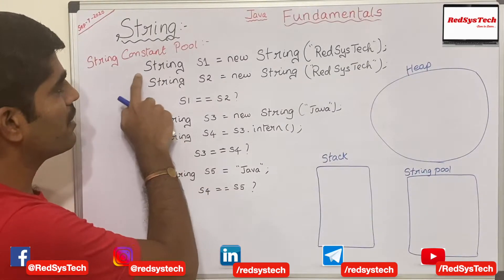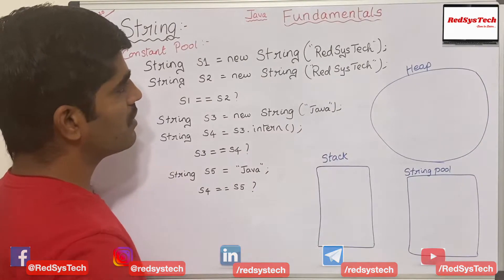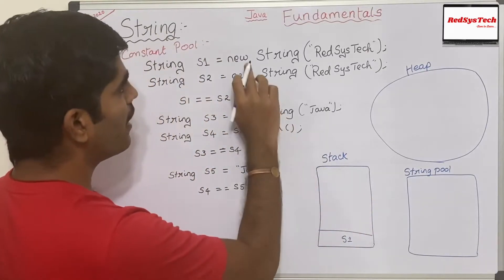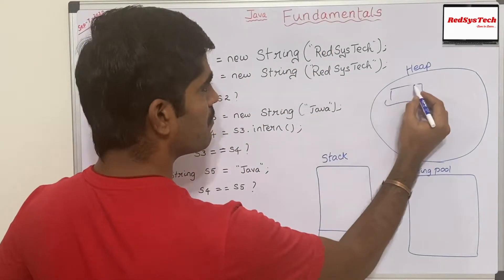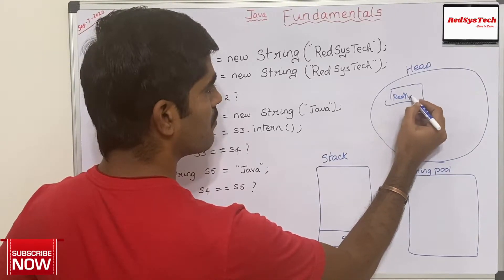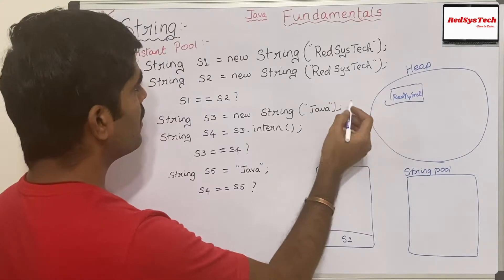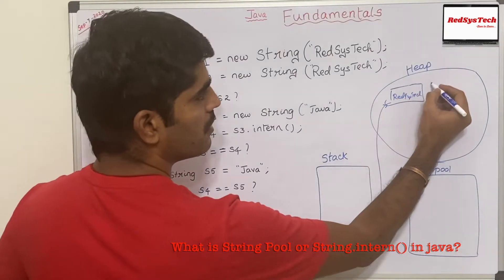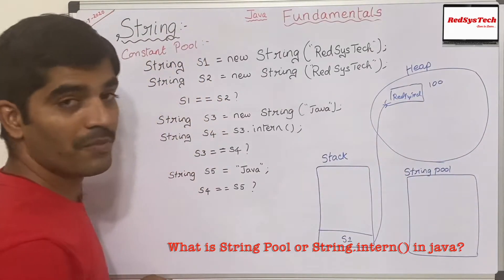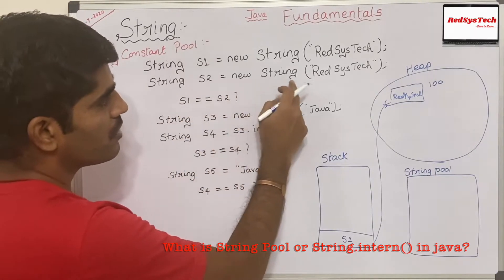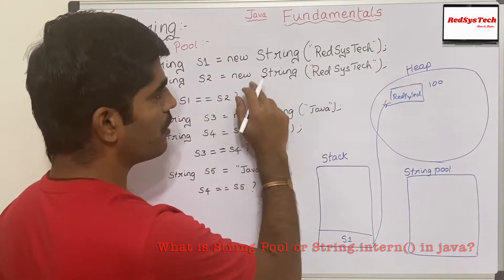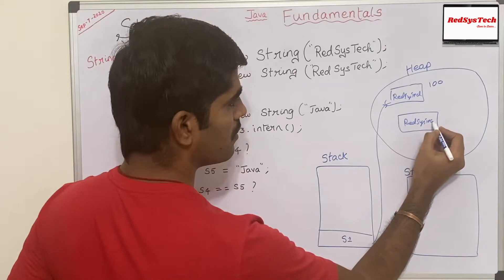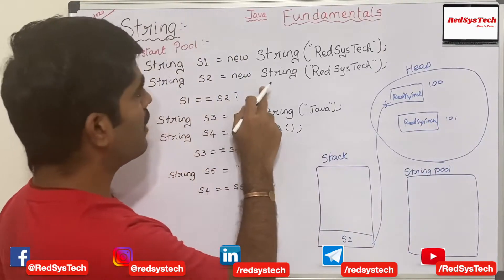Let's say I'm creating: String s1 = new String("register"). When this line gets executed, s1 is the object reference which gets created in the stack, and the object is created in heap with the value 'register'. This object is referred to by s1 at, let's say, address location 100. Then String s2 = new String("register") — again using the new keyword — creates another object in heap at address location 101, assigned to s2.